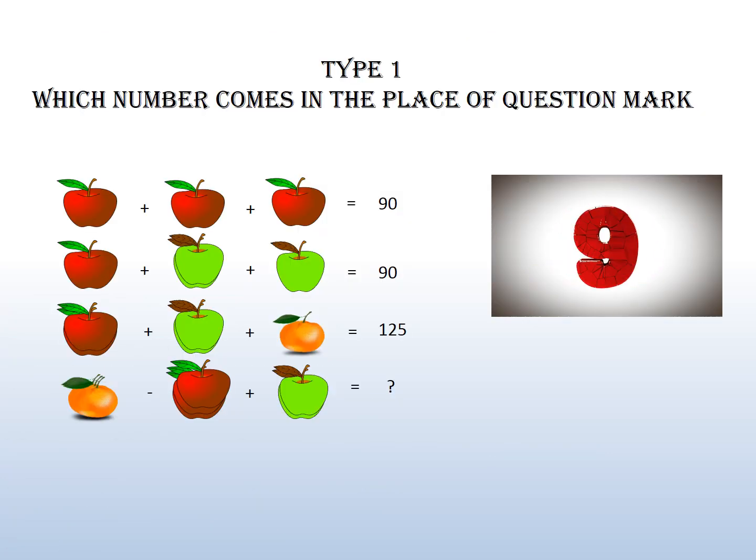Solve this simplification puzzle. Keep in mind the order of operations: bracket first, then of, then division, then multiplication, then do the addition, and at last do the subtraction.